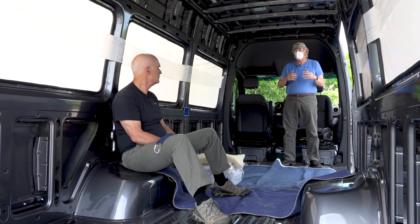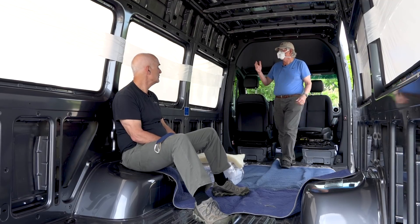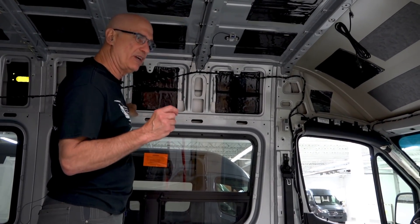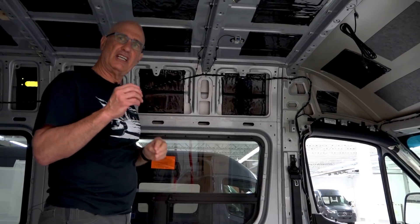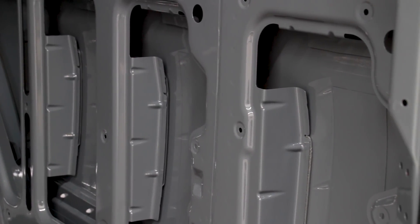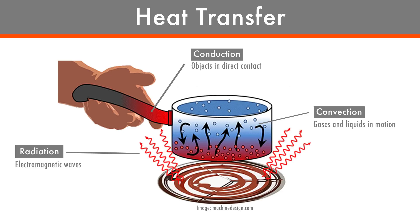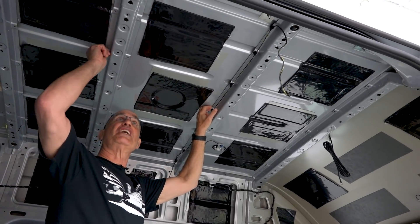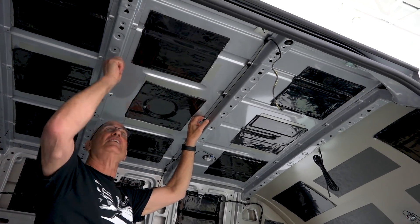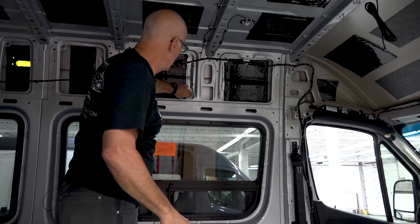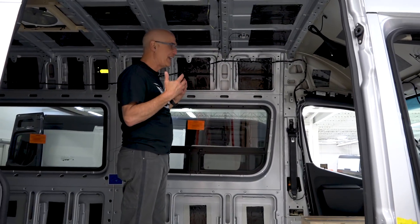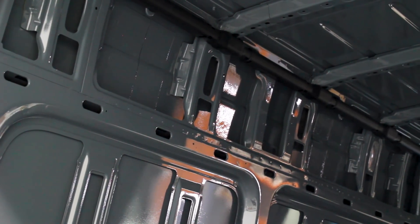There's also conduction and convection through the structure of the van. All of this structure is attached — it's either glued, which gives a little bit of thermal insulation and interrupts the thermal conductive transfer, but only a very small amount. A lot of these are in contact: the structure with the skin. This is the roof skin, this is the structure, this is the wall skin, this is the structure. So there's contact there, and that creates conductive heat transfer.